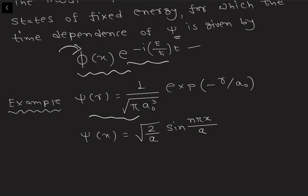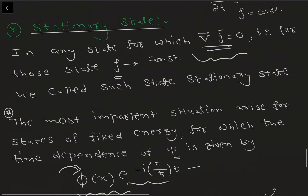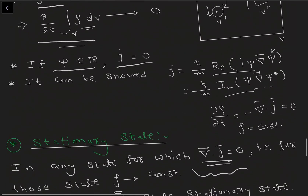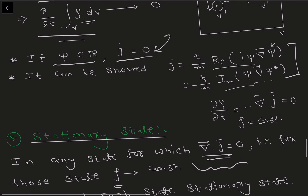Two examples: the ground state wave function of the hydrogen atom and the wave function for a particle in a box — both are stationary states, and for both of them the divergence of J equals zero. In the next video we will see some problems about probability current density and prove the two alternative formulas for J as well as the theorem about real wave functions.